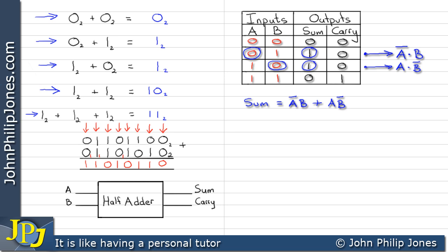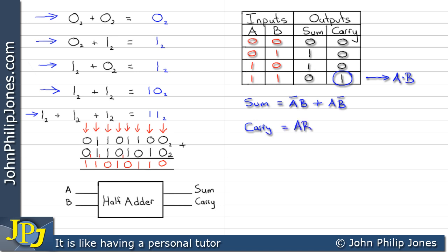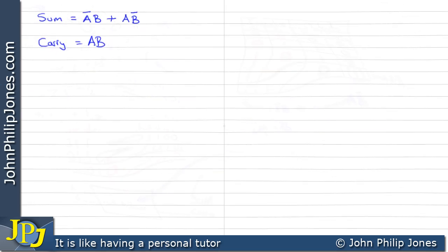Turning to the carry output, the only occasion when carry has a one is when both A and B are one. That gives us the minterm A AND B. We can therefore say that Carry = A · B. In this particular case neither of these expressions can be minimized further.